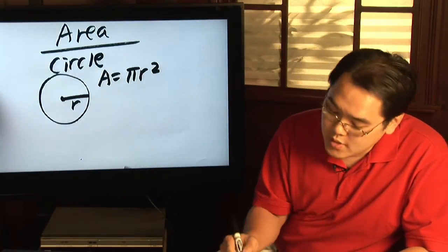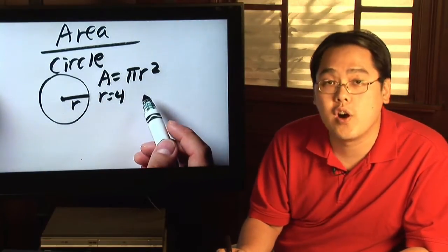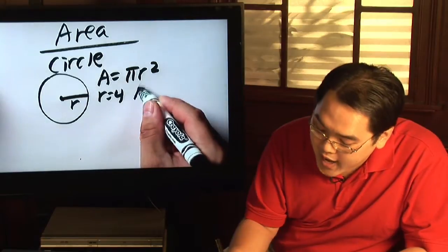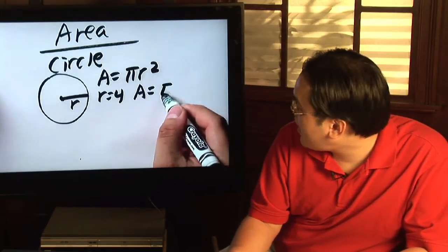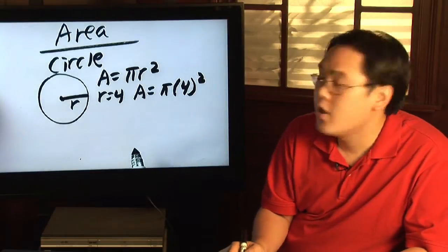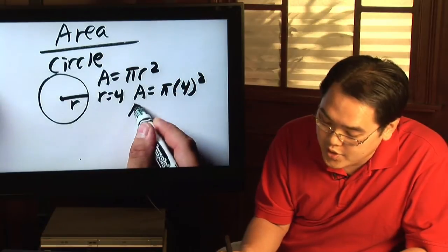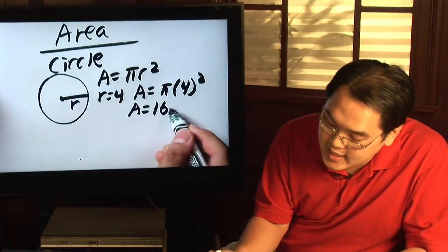Now suppose you know that the radius is equal to four. All you need to do is plug in the four where the r is, so the area is A equal to pi times four squared. All you need to do is do the math, and four squared you know is sixteen, so your area is equal to sixteen pi.